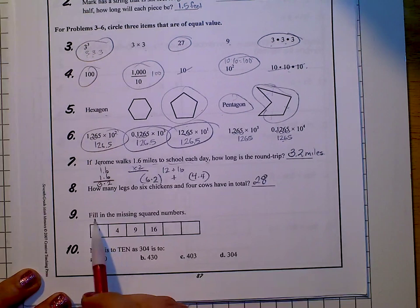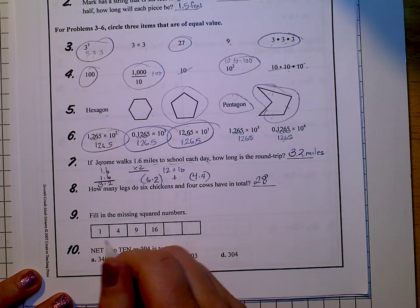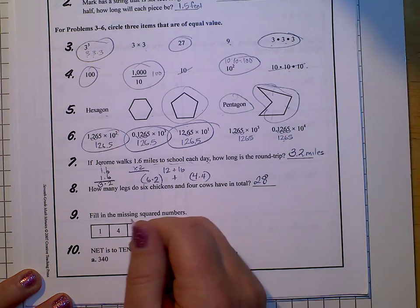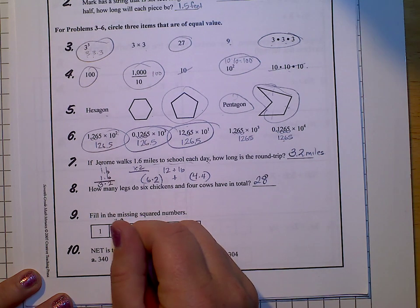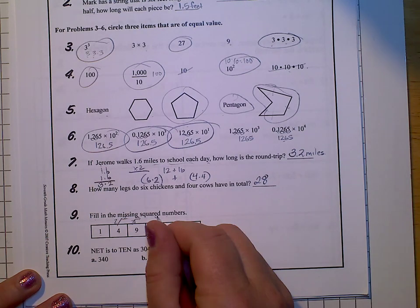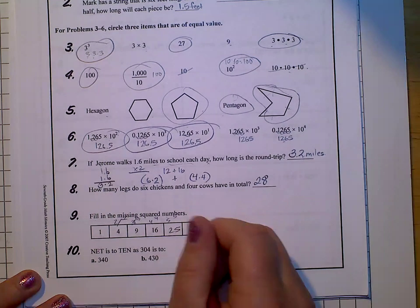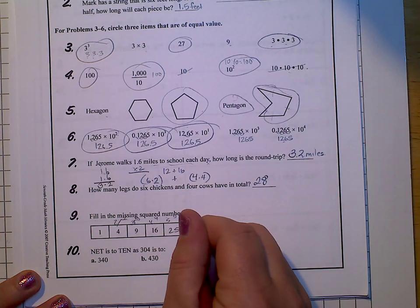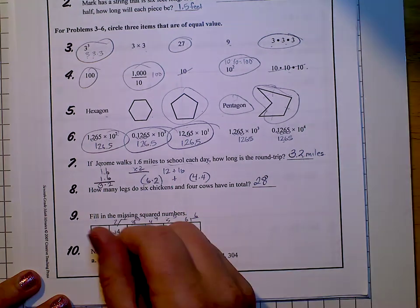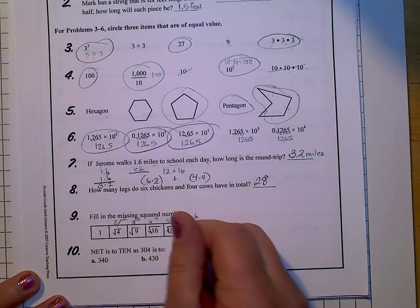Fill in the missing squared number. Okay, so squared number. Oh, four is four, nine. Okay, so four is two times two. Perfect. Nine is three and three. Sixteen's four and four. Five and five would be twenty-five. Six and six would be thirty-six. I don't really understand why they didn't do just that, but whatever.